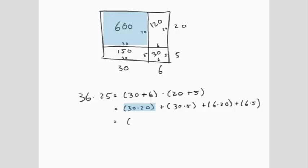30 times 20 is 600, 30 times 5 is 150, 6 times 20 is 120, and 6 times 5 is 30. And now we add them up. 600 plus 150 is 750, 750 plus 120 is 870, 870 plus 30 is 900.